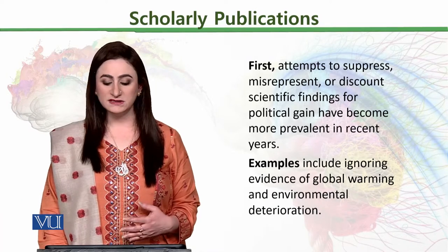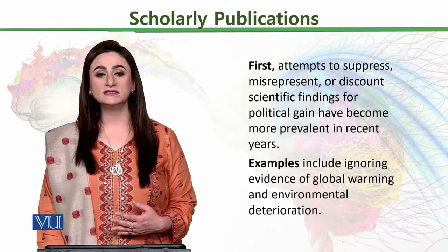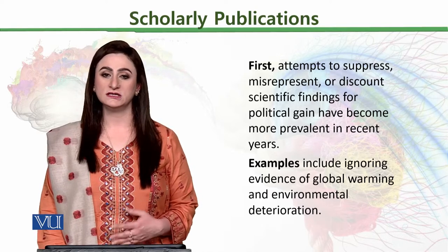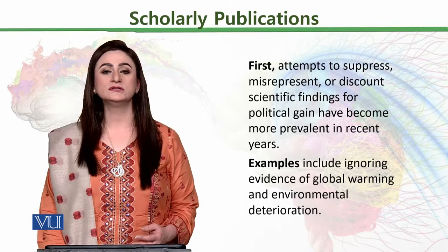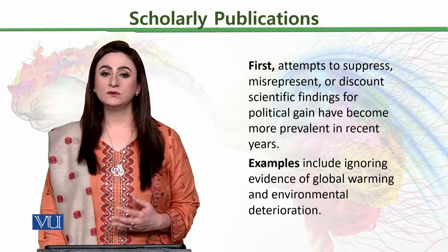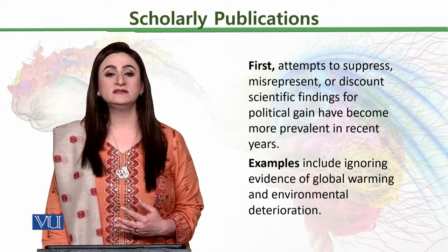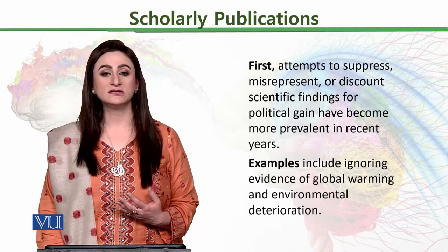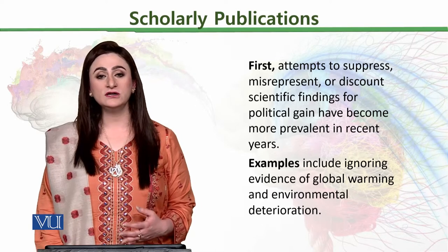Attempts to suppress, misrepresent, or discount scientific findings for political gains have become more prevalent. A trend seen recently is that when something booms, multiple research papers appear suddenly. For instance, with the beginning of COVID, the first publication appeared approximately one and a half months after the first case — raising questions about how data collection, research design, analysis, and ethical formalities could all be completed in such a short time. Some journals are fast-track, open-access journals that charge heavily and publish with instant peer review.